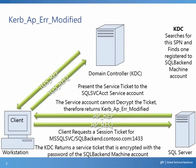In the case of an SPN which is misplaced, we would see AP_ERR_MODIFIED. A client would request a service ticket for MSSQLSVC/SQLbackend.contoso.com:1433. The KDC searches for this SPN and finds one registered to the SQL backend machine account, then returns a service ticket encrypted with the password for the SQL backend machine account. The client presents this service ticket to the SQL SVC account, but the service account cannot decrypt this ticket since it was encrypted with the computer's password, and therefore returns the error KRB_AP_ERR_MODIFIED.